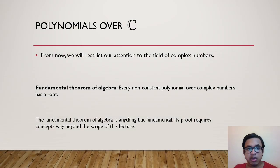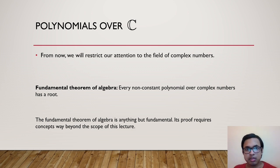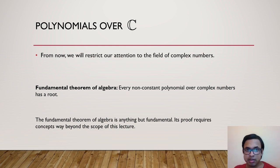Now we consider polynomials over C. Complex numbers have a very useful property: the Fundamental Theorem of Algebra, which says that every non-constant polynomial over C always has a root — there always exists x ∈ C with f(x) = 0. Although it is called the fundamental theorem of algebra, its proof requires substantial undergraduate concepts and will not be dealt with in this lecture.